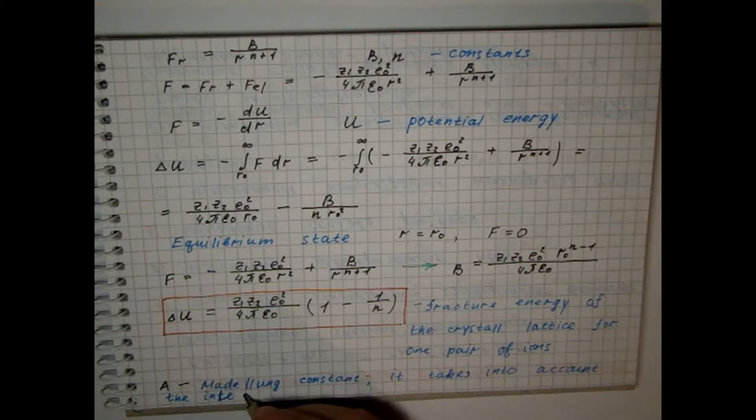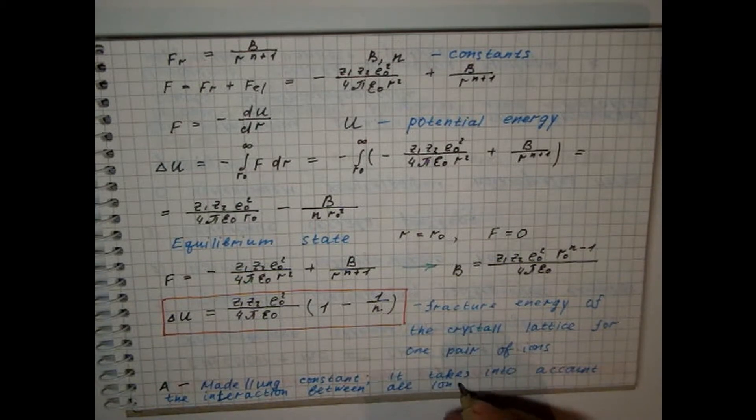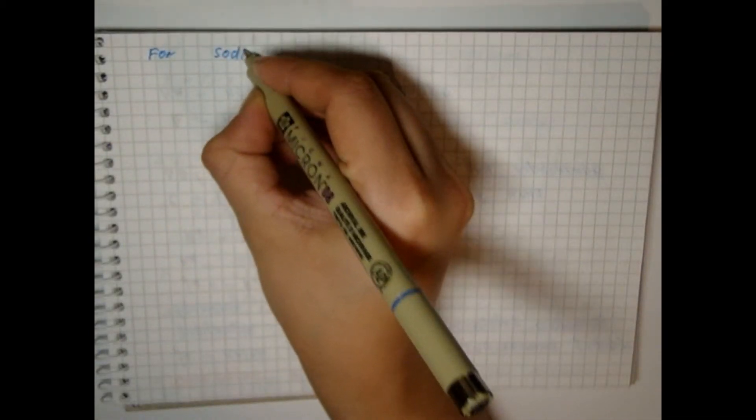It is calculated as the sum of a series of numbers and depends on the types of crystal lattice. For example, for sodium chloride,